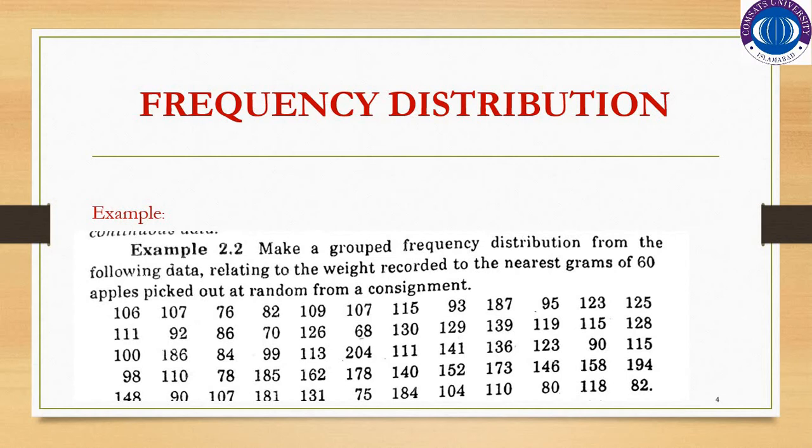We defined what is lower class limit, what is upper class limit, what are class boundaries, what is class mark, and what is frequency. We also covered how to decide the number of classes and how to select the class width. All these things were described in the previous part.